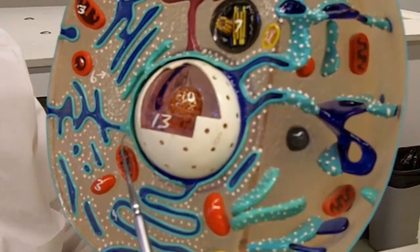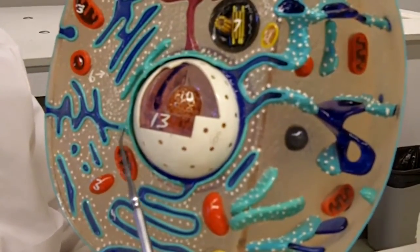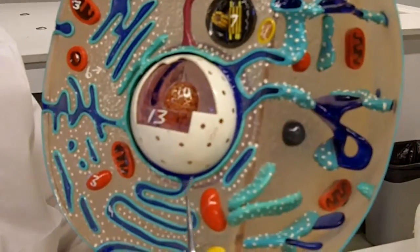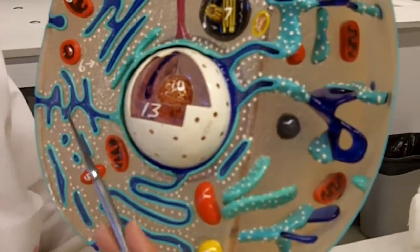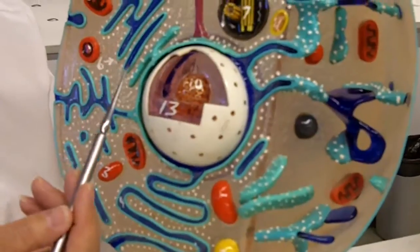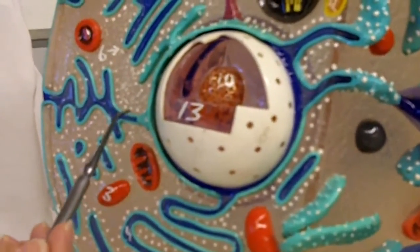Also on the outside, the outer membrane of this nuclear membrane, also known as an envelope, are ribosomes. Continuous with the outer nuclear membrane is the endoplasmic reticulum. This is the rough ER because you see these little white spots here. They're supposed to represent ribosomes.